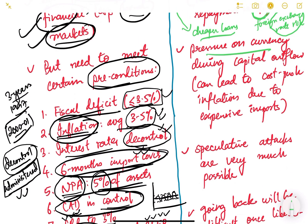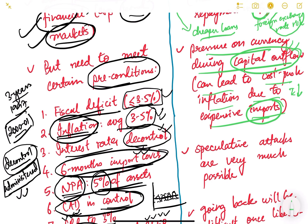Another argument was the pressure on currency during capital outflows, which can lead to cost-push inflation due to expensive imports. For example, if the rupee depreciates significantly due to capital outflows, crude oil imports become very expensive. Since crude oil is more expensive, transportation costs rise, and inflation increases — this is called cost-push inflation because the cost of commodities rises due to expensive imports.